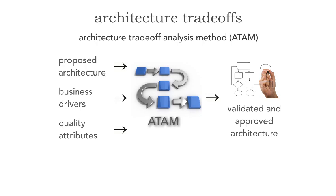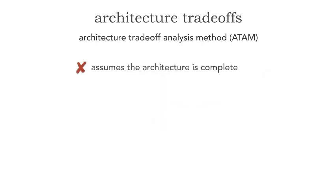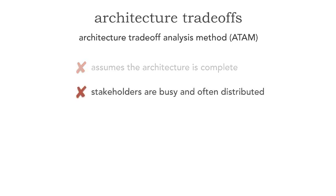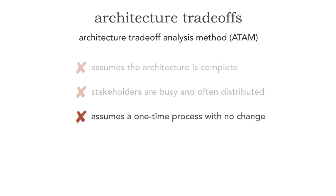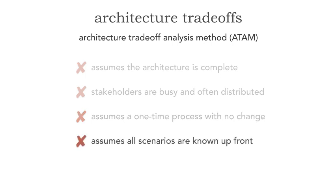ATAM is a good process, but it has some issues. First, it assumes the architecture is complete, which is a problem because we've spent so much time creating an architecture that may not work. Second, stakeholders are often busy and distributed, making it hard to get them all into one room. Third, the original ATAM process assumes a one-time evaluation, but with evolutionary architecture and emergent design, the architecture evolves with every new requirement. Finally, it assumes all scenarios are known up front.